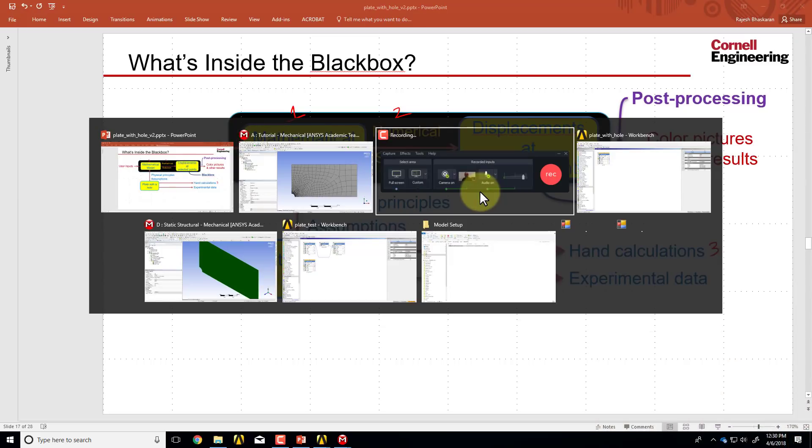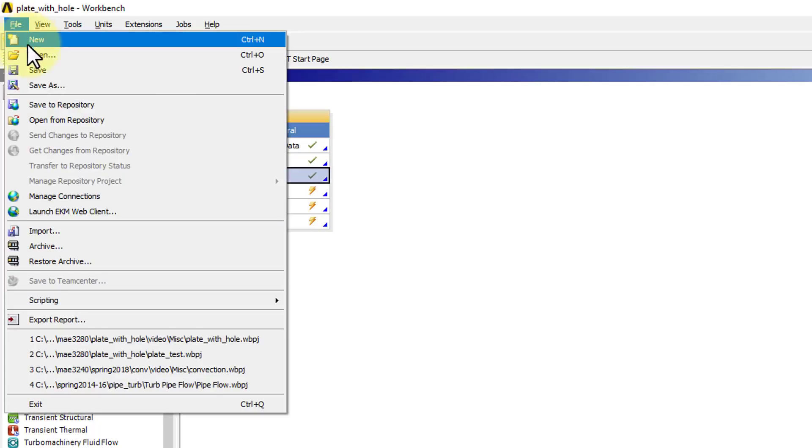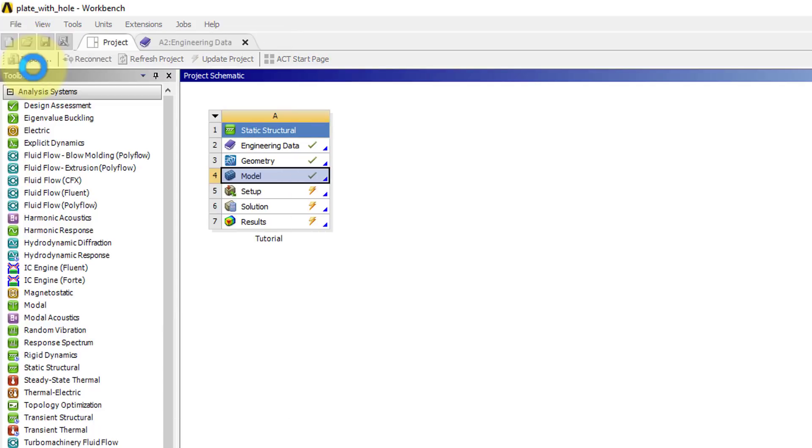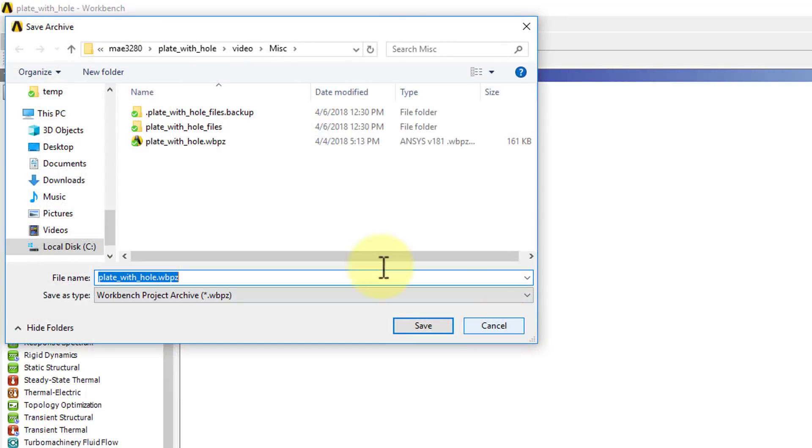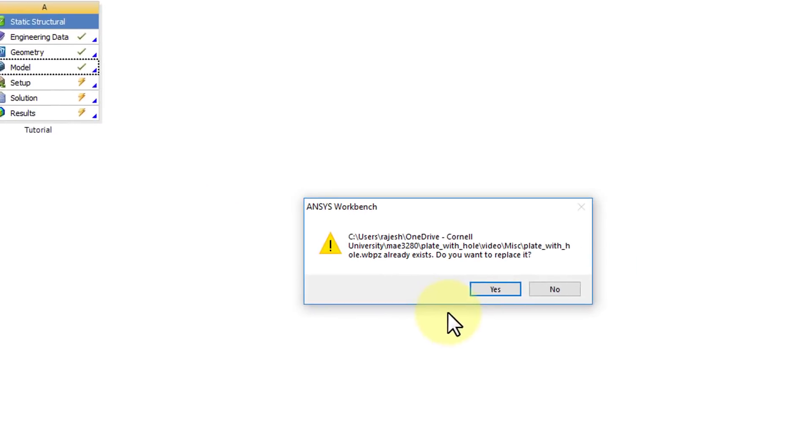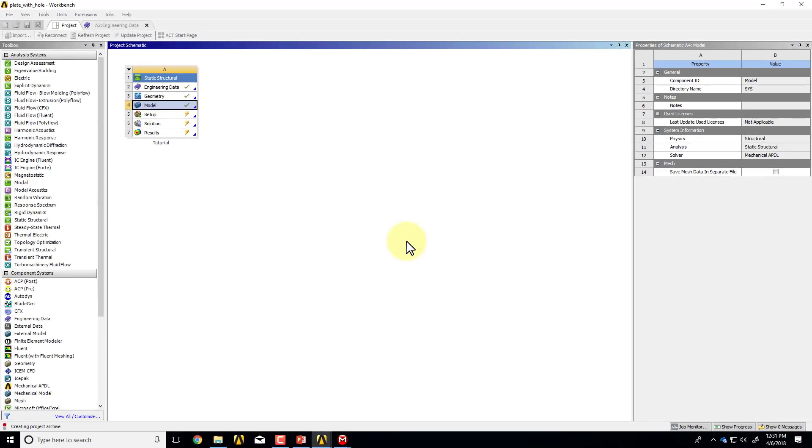But before that, let me go to the project page and say file, save, and then I'll say file. I'll also overwrite the WBPZ that I have. I'll say yes, replace. That means my WBPZ is also up to date.